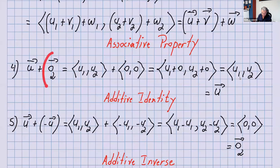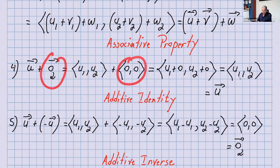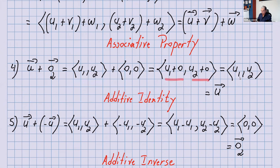For the zero vector in R², the zero vector has components (0, 0). So U plus the zero vector is (U₁, U₂) plus (0, 0), which gives (U₁+0, U₂+0). A number plus zero is that number, so this equals (U₁, U₂), which is just U. Additive identity satisfied.